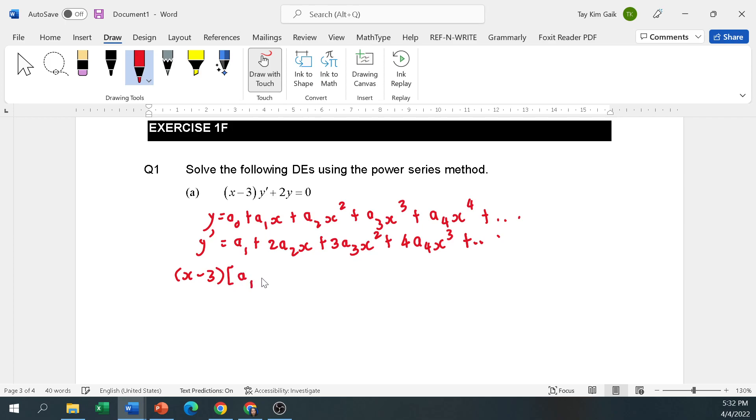So you have x minus 3y prime, which is a1 plus 2a2x plus 3a3x squared plus 4a4x cubed plus 2y. Y is a0 plus a1x plus a2x squared plus a3x cubed plus a4x to the power 4 equal to 0.